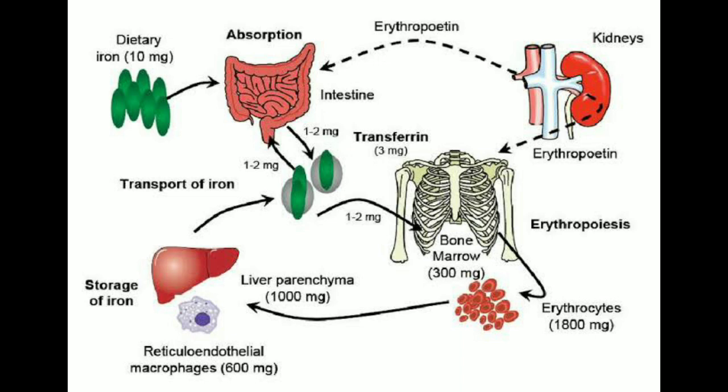When RBCs have lived their lifespan of about 120 days, as mentioned in our last video, they are destroyed. Hemoglobin is then released from the cells and ingested by monocyte and macrophage cells. The iron is liberated and stored mainly in the ferritin pool to be used as needed for the formation of new hemoglobin.